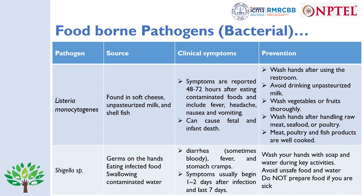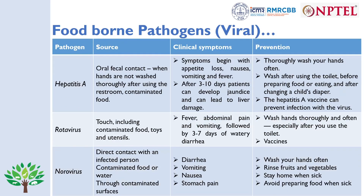Shigella species are found on contaminated hands, through eating infected food, or swallowing contaminated water. Symptoms include diarrhea — sometimes bloody or dysentery — fever, and abdominal cramps, usually beginning one to two days after infection and lasting seven days. Prevention includes washing hands with soap and water during key activities, avoiding unsafe water and food, and not preparing food when sick.